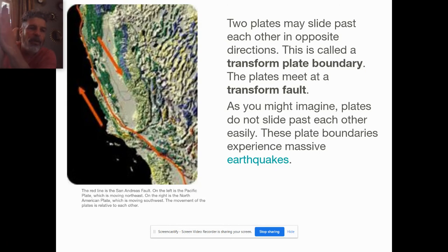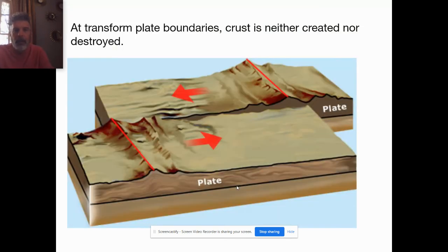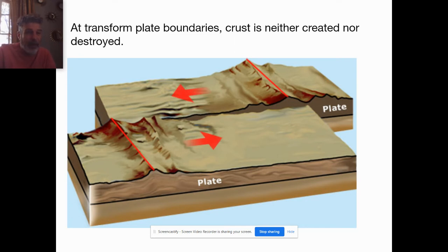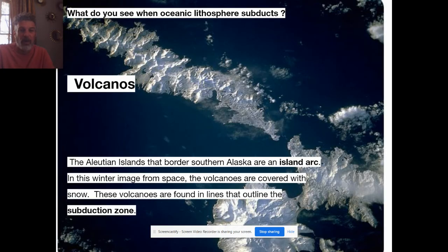As you can imagine, the plates don't move very easily — they get stuck. But when they do move, we get earthquakes. We'll be talking about earthquakes in a week or two. Transform plate boundaries are the only type where crust is not created like at a divergent boundary, and not destroyed through the process of subduction. It's the only boundary where crust is neither created nor destroyed.